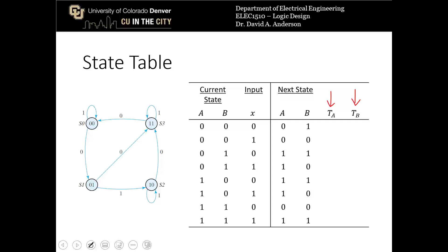So in the first row, A goes from 0 to 0, here to here. That is not a toggle, so T sub A is a 0. B goes from 0 to 1, that is a toggle, so T sub B in that row is a 1. In the next row, A and B both go from 0 to 0, neither of them toggle, so they are both 0s.